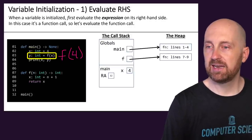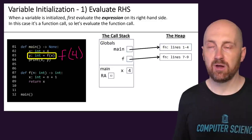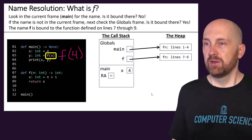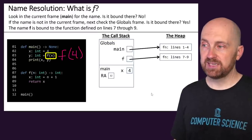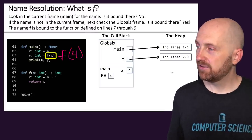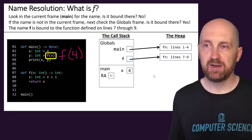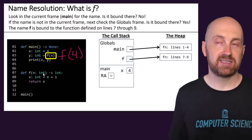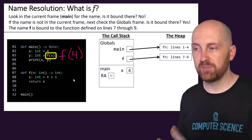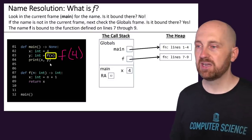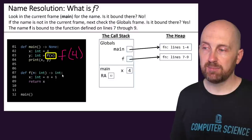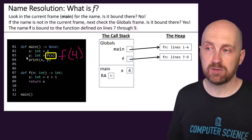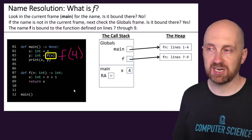We're making progress. f is bound to the function defined on lines 7 through 9, so we look at that definition and check that the arguments match up with the parameters. We can also check the return type: this function returns an integer and we're trying to assign the result to an integer variable, so that checks out too.